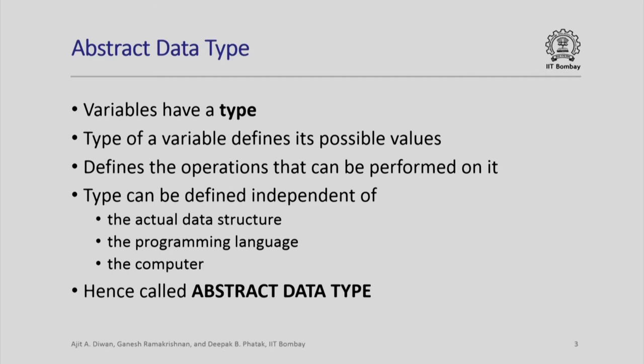Variables have what is called a type. We have seen built-in types like int and float. The type of a variable defines the possible values it can take. When you declare a variable as int, it specifies that this variable can take integer values and also defines the operations that can be performed on it — integers can be added, multiplied, and so on. The type of a variable is actually independent of the data structure used to represent it, the programming language used, or even the computer used. Hence, we call this type an abstract data type.